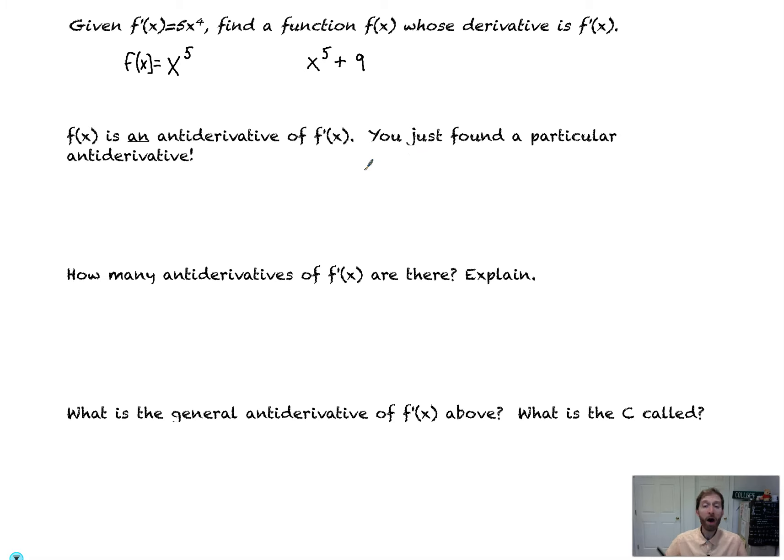So the next question is, how many antiderivatives of f'(x) are there? How many different solutions? Well, there's infinitely many constants, right? We could add or subtract any number of numbers. And so we would write that as x^5 + c. And that would be the general antiderivative. So the general antiderivative is f(x) = x^5 + c. That c is called, and I'll write it out here for you, the constant of integration.